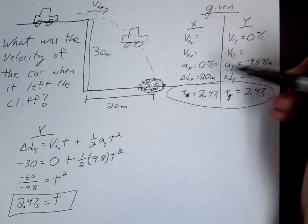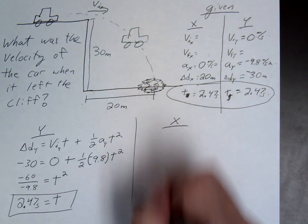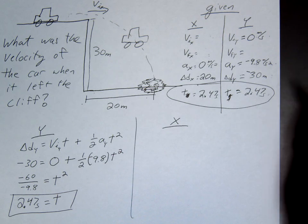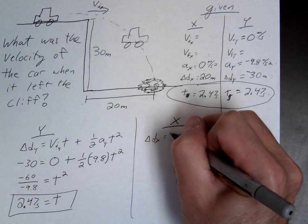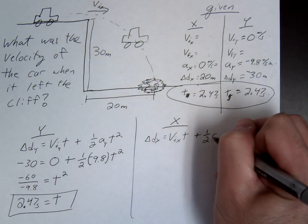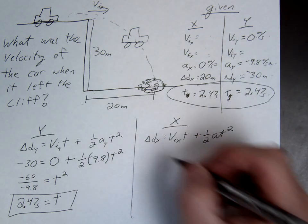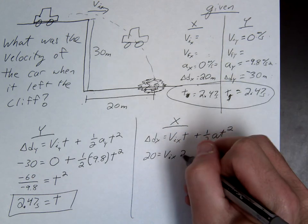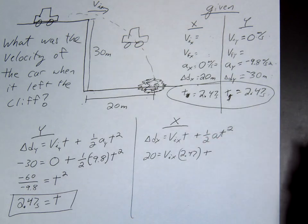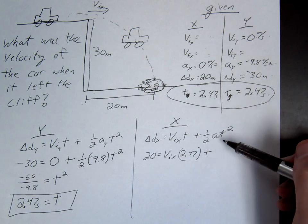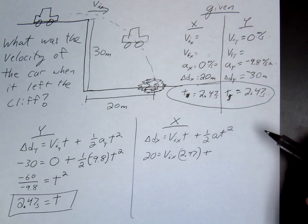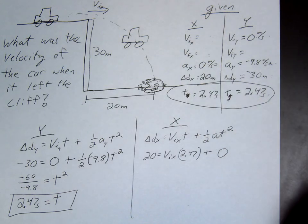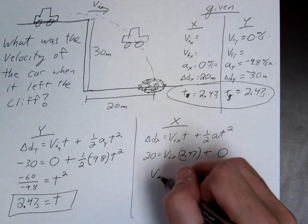We now have these three knowns. We should be able to find the fourth. Choose an equation. I think the same one's going to work. d_x is 20, the initial is what we're solving for, times 2.47. Here's the big mistake. A lot of people go 1 half, negative 9.8, t squared. What's wrong with that? A is 0. In the x direction, A was 0. In the y direction it was 9.8. We're going to stick with the x direction at this point.